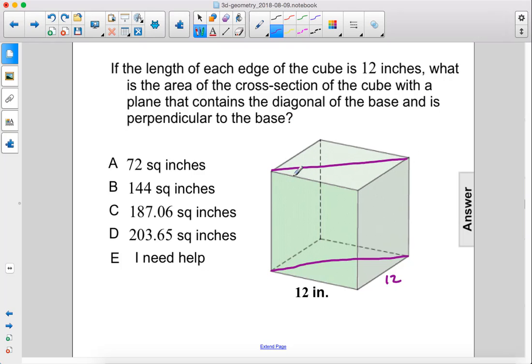So our cross section is this plane that cuts right through the middle. Now this triangle at the bottom is a 45-45-90 triangle, since this is a square,